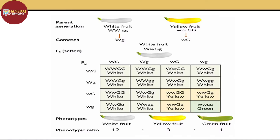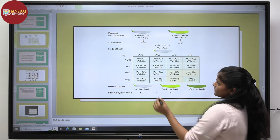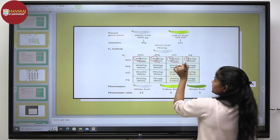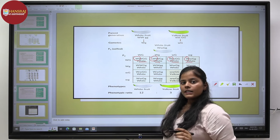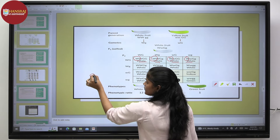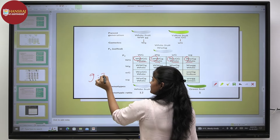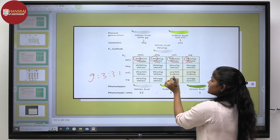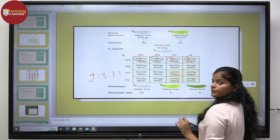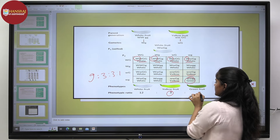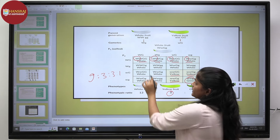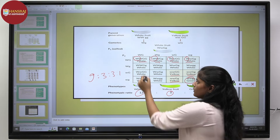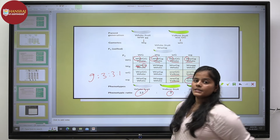As we can see in this Punnett square, wherever capital W is present, only a white phenotype is being seen. This leads to a deviation from the typical Mendelian ratio of 9:3:3:1. Only 3 yellow-colored phenotypes are present, only one green fruit, and the remaining 12 are white fruits due to the masking of the G gene by the dominant epistatic gene W.